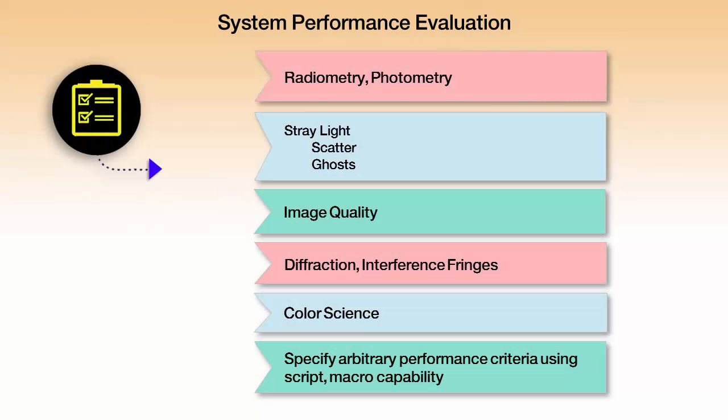In terms of the kinds of performance evaluation we can do, there are general analysis capabilities we use very often. Looking at efficiency — how much of the light from the source arrives at a detector or target. The irradiance, basically how concentrated it is into the area where it is incident. Radiant intensity, which is the angular concentration — how narrow is the beam or how large is the cone and how much energy is concentrated per unit solid angle. Radiance or luminance. And another analysis we are doing more and more is color science or color analysis.